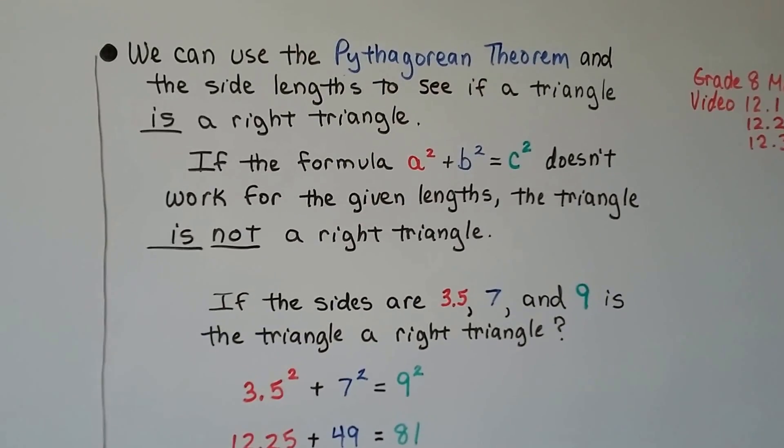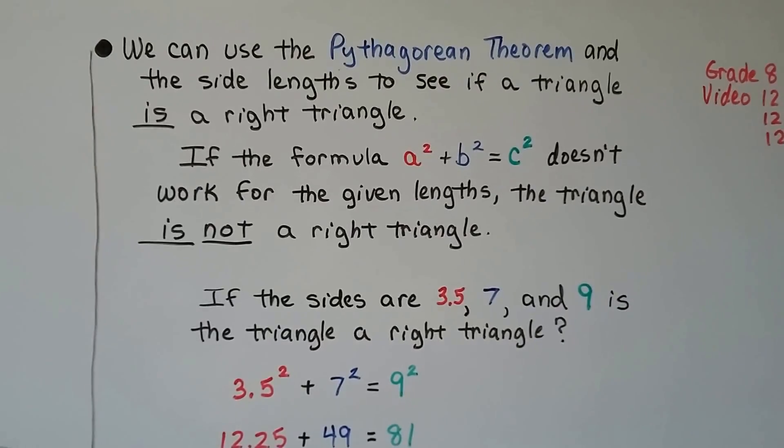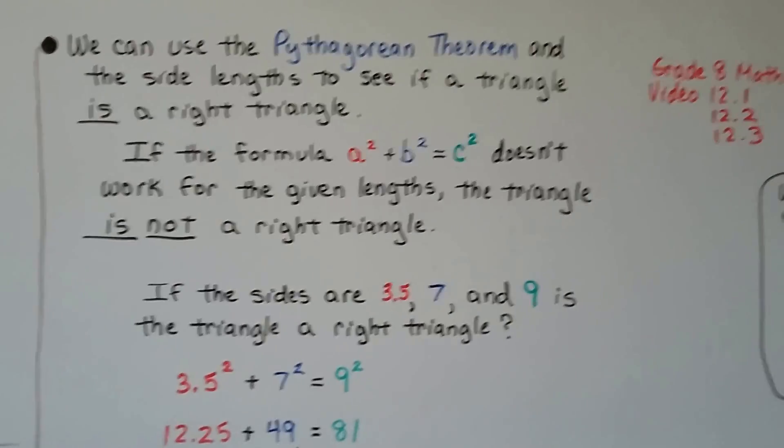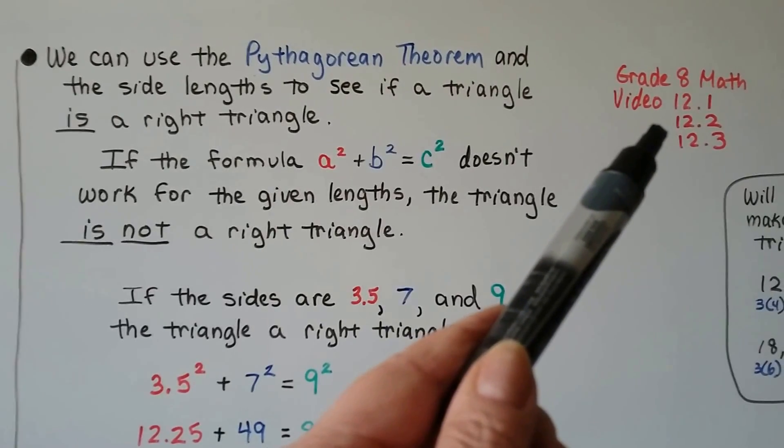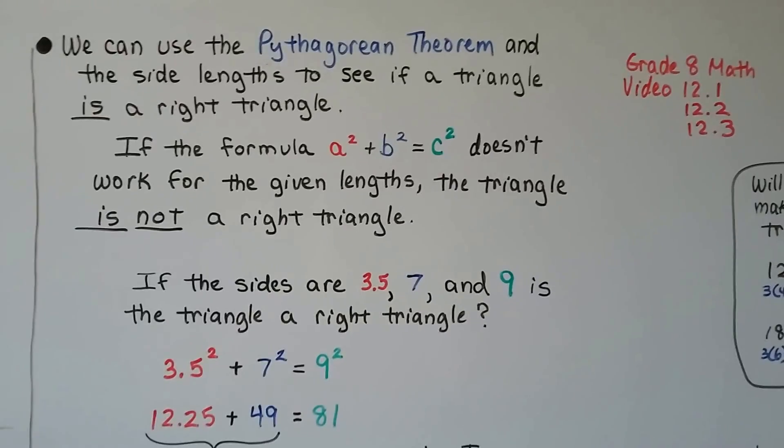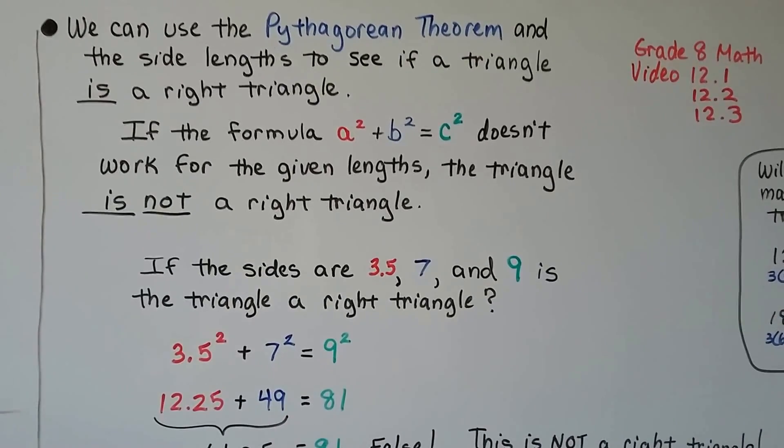We can use the Pythagorean Theorem and side lengths to see if a triangle is a right triangle. We talked about this in the Grade 8 Math 12.2 video. It talks about the converse of the Pythagorean Theorem and proving if a triangle is a right triangle.